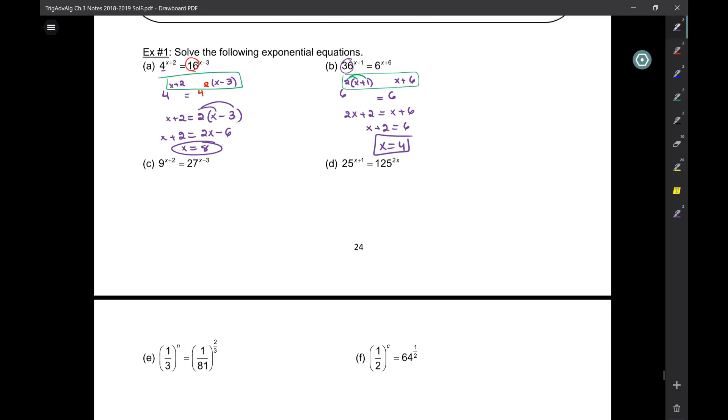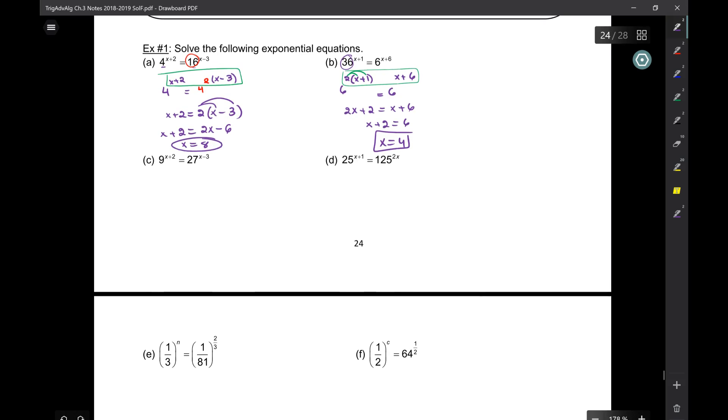So that's the simplest case. Now, what if you have bases that are not directly related? So I have a nine, and I have a 27. I can't write this as nine to the power of something. So what am I going to do? Make them both threes. Break it down into a more elemental base. So I can rewrite the nine as three squared. And I can rewrite the 27 as three cubed.